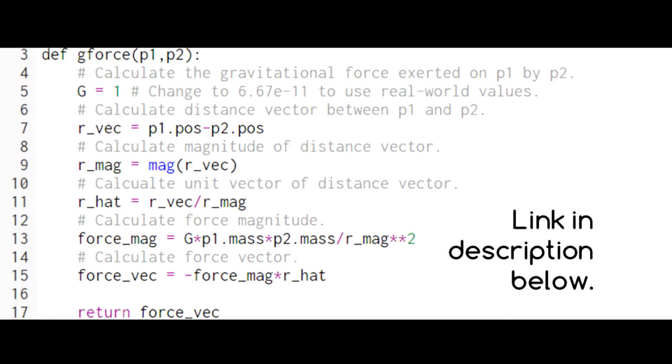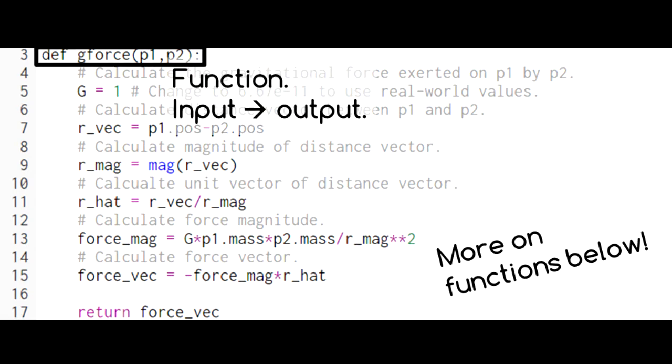In this code, which is available in a link in the description below, we're calculating the gravitational force using a function. Just like in mathematics, a function in Python takes inputs and produces outputs. For more information on how functions work in Python, see the video link in the description below.